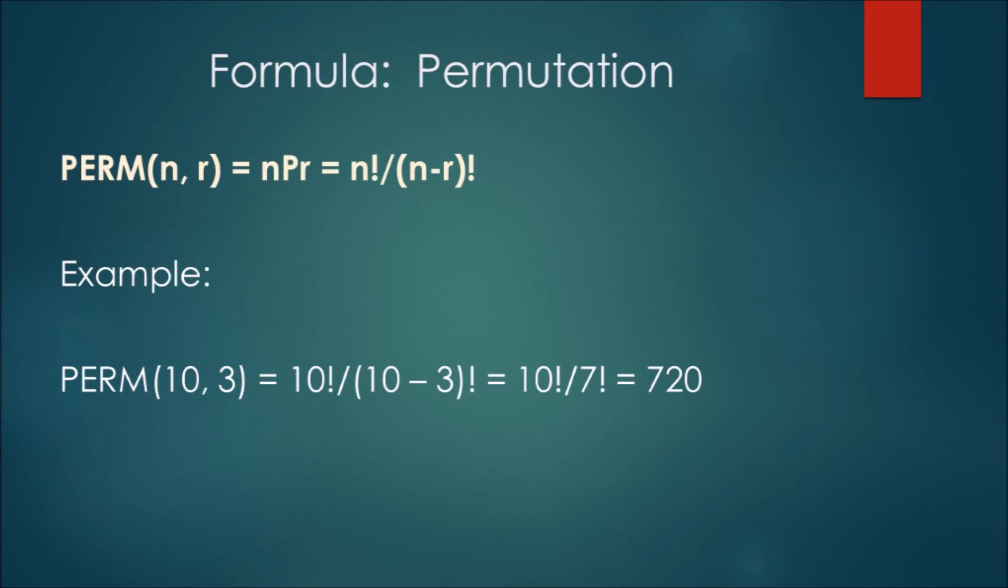Let n be the number of objects in a group. Let r be the number of objects in your desired subset. Then the number of permutations is calculated by n factorial divided by n minus r factorial. For the example, the number of permutations where n is equal to 10 and r is equal to 3 is 720.